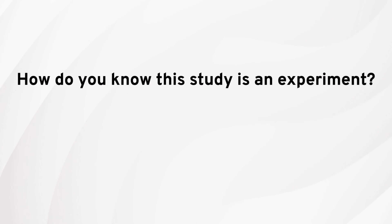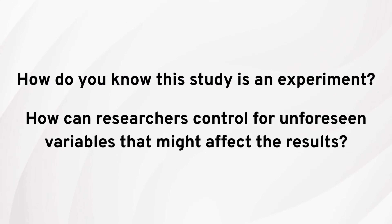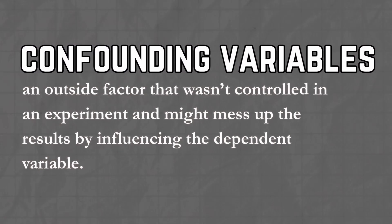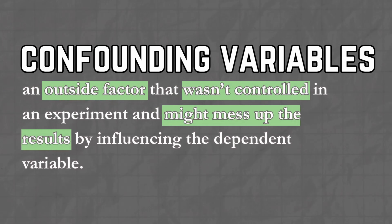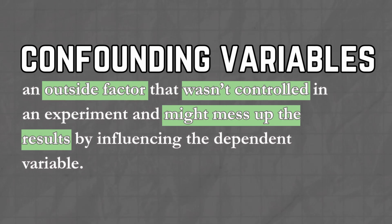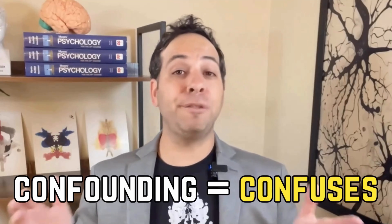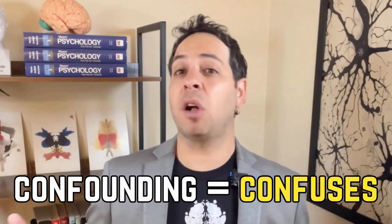Random assignment is huge. If you ever get a question like 'How do you know this study is an experiment?' or 'How can researchers control for variables that might mess with the results?' — the answer is random assignment. Before we wrap up, there's one last research villain we need to talk about: confounding variables, aka the gremlins of psychology research. A confounding variable is anything other than the independent variable that might affect the dependent variable — a sneaky extra factor that can mess with your results.